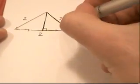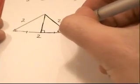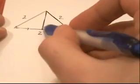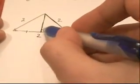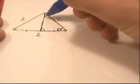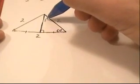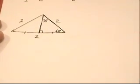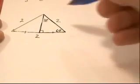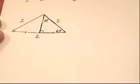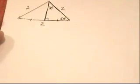This angle here is 60 degrees, that angle is 90 degrees, and obviously this angle up here has to be 30 degrees. So let's isolate just this triangle and work with it for the rest of the video.